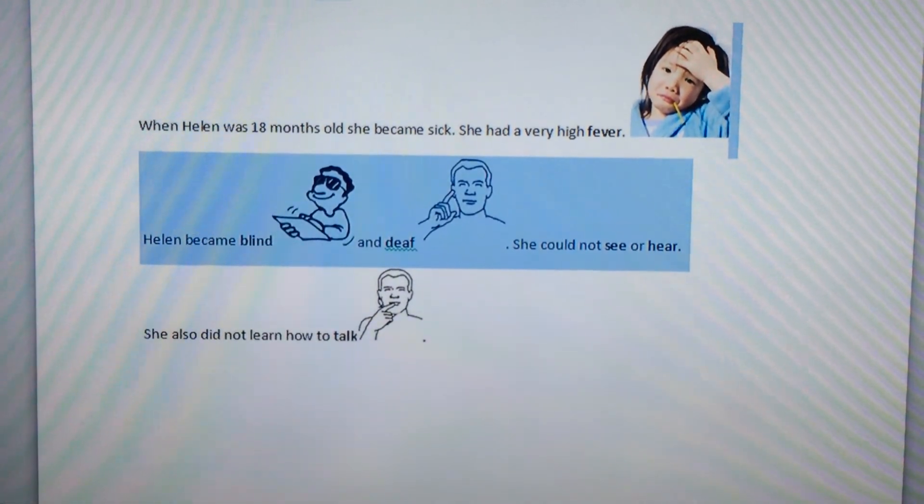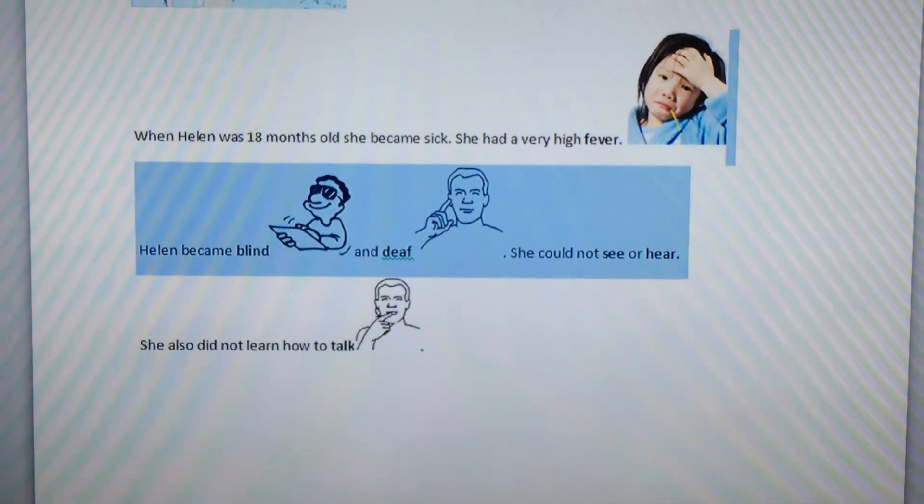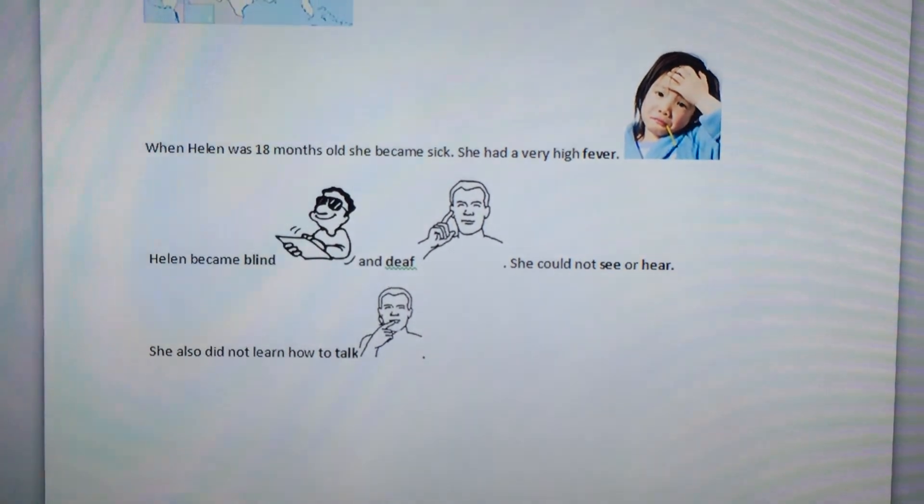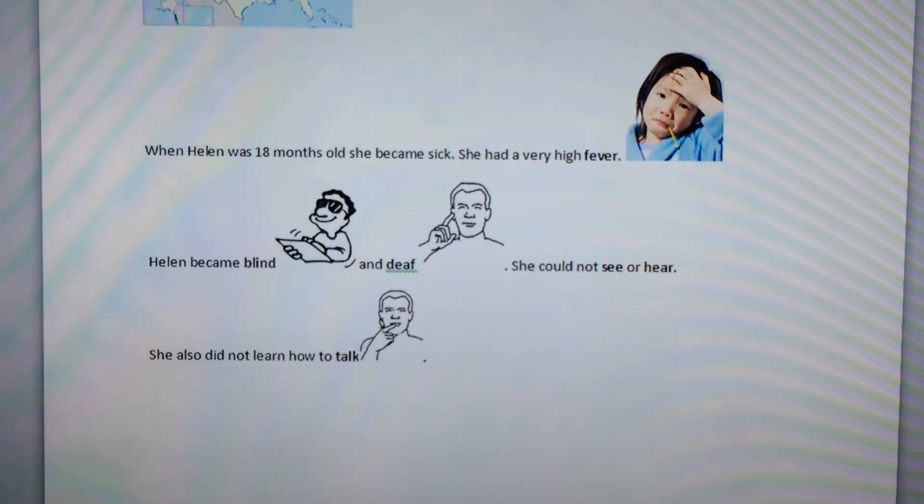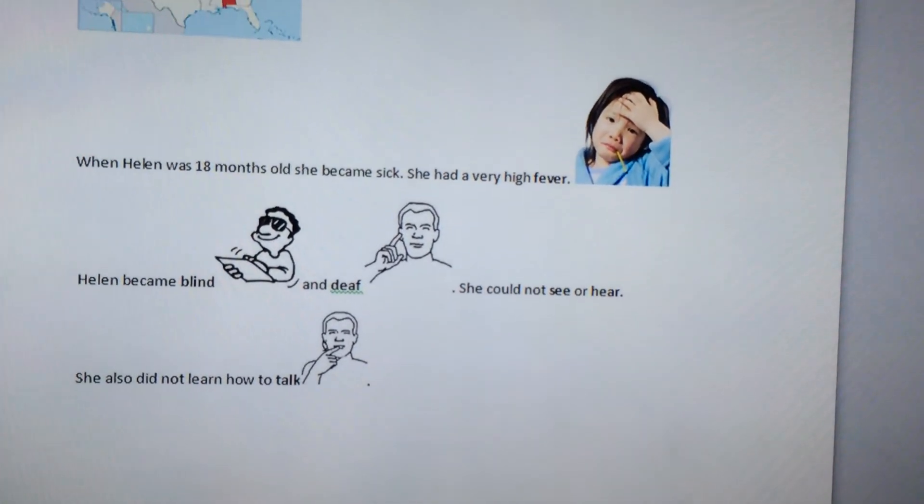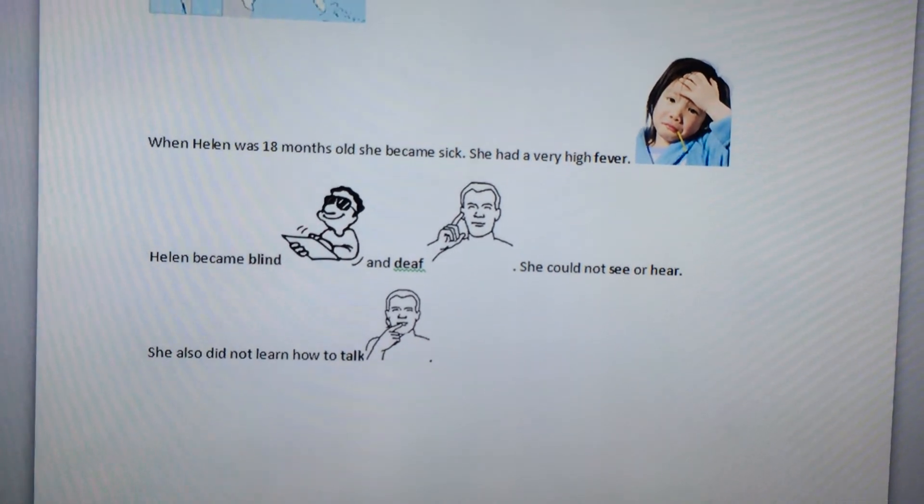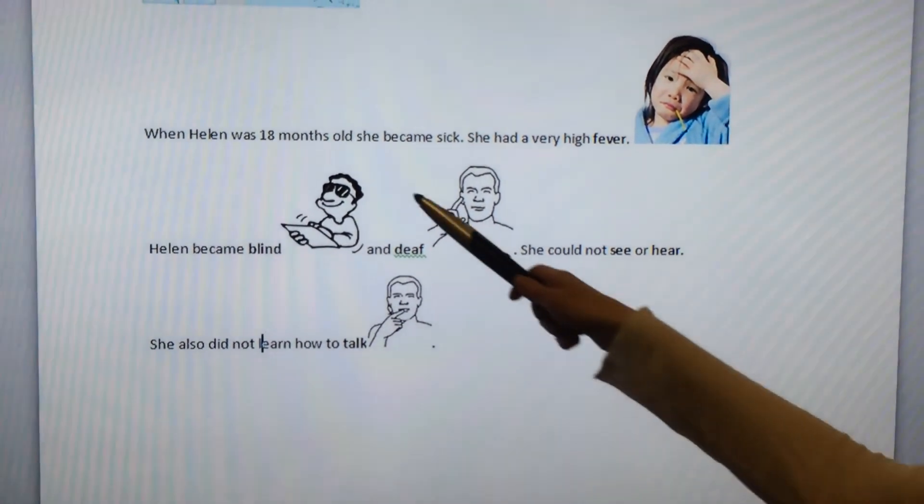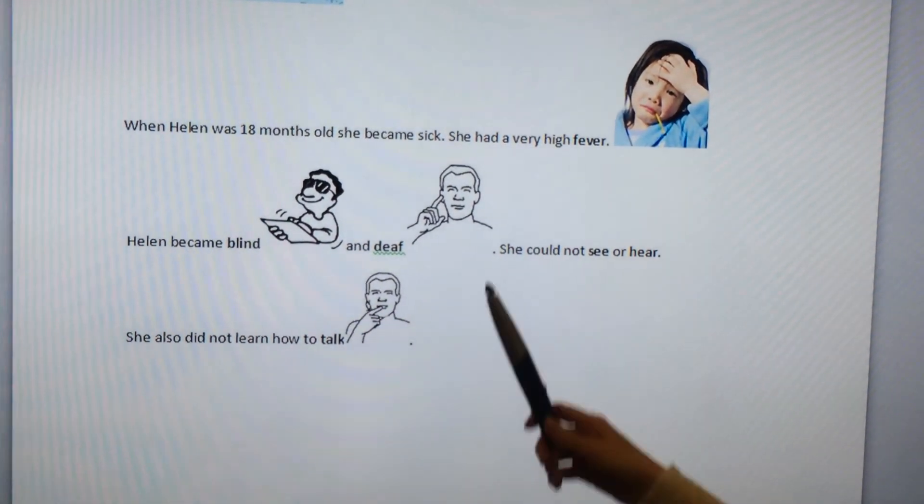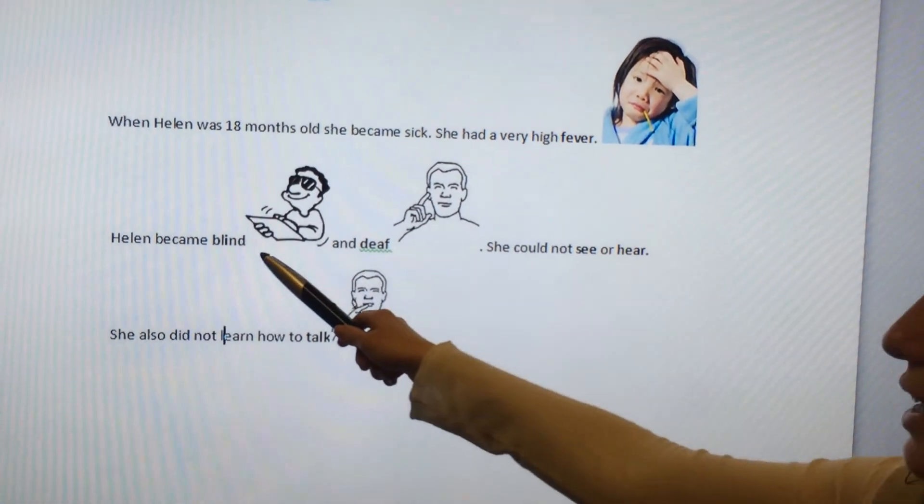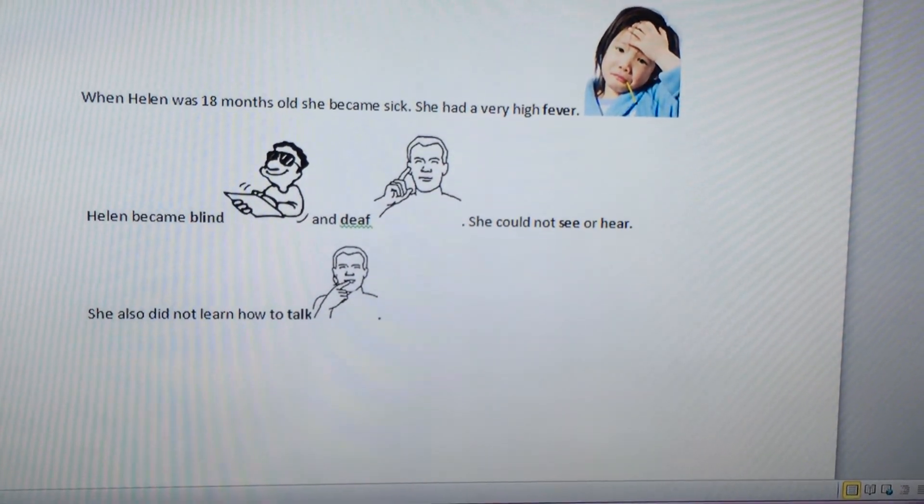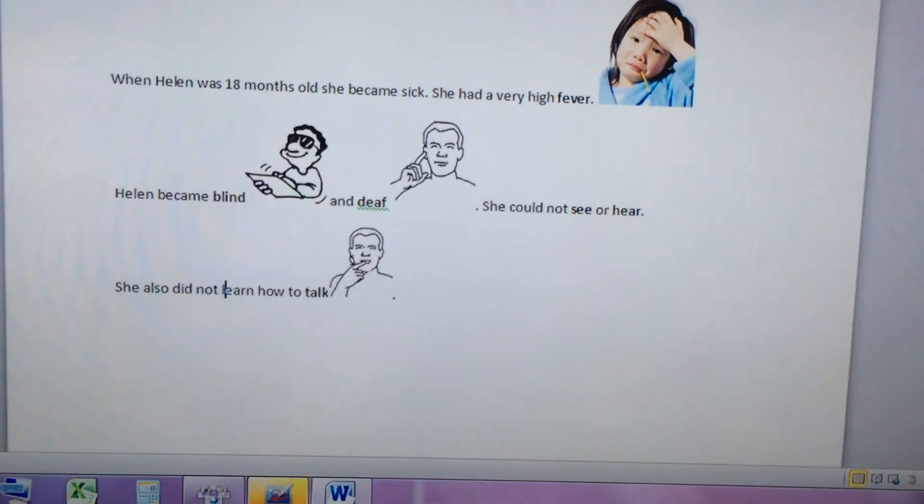If you are a Spanish speaker or a Portuguese speaker, be very careful about pronouncing the sounds at the end of the words. A lot of Spanish and Portuguese speakers do not pronounce the word endings because you don't always pronounce the word endings in your language. That's something you need to work on in English. Especially with the word months. Make sure your tongue is between your teeth. Months. She became sick. Blind. Deaf. Talk. Not. Make sure you're pronouncing the consonant sounds at the end of the words.